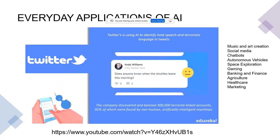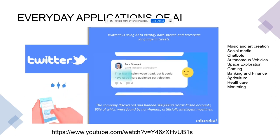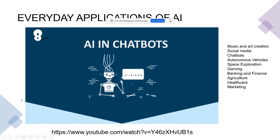Twitter's AI is used to identify hate speech and terroristic language in tweets, making use of machine learning. You cannot monitor everything in social media — terrorist groups or illegal organizations may use it for communication. Twitter uses artificial intelligence to understand whether a conversation is safe or not. According to a recent survey, the company discovered and banned 300,000 terrorist-linked accounts, 95% of which were found by non-human artificially intelligent machines. Moving on, we have AI in chatbots. With the introduction of ChatGPT and more intelligent AI, chatbots are becoming much more intelligent, and soon they will likely replace many human jobs.